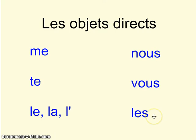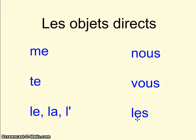It is important to understand that le, la, et les can represent people — him, her, them — or objects, like the chair, the desk, the lamp. So they can also mean 'it.'